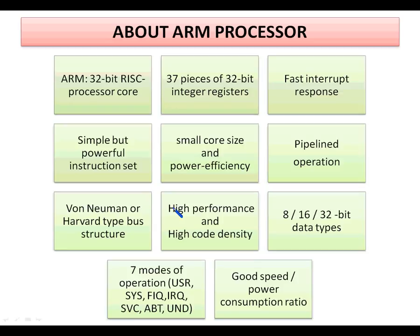The Jazelle state is used to execute Java byte codes. It is up to the user's choice to design the operating state of the processor. ARM can support different data types: 8-bit support for Jazelle technology, 16-bit for Thumb state, and 32-bit for ARM state.